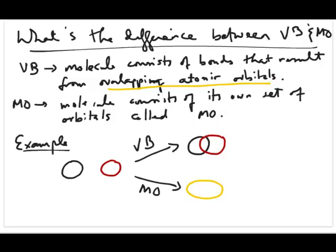So it's sort of saying that the molecule is its own unique entity, as opposed to in the valence bond model, where the molecule is really not necessarily a unique entity, but it's composed of the individual atoms.